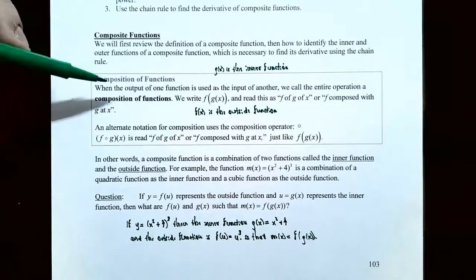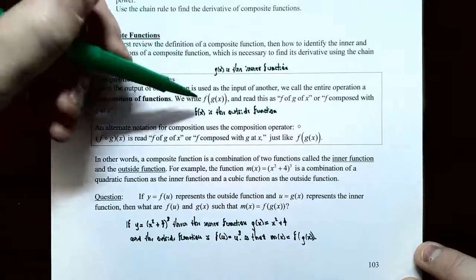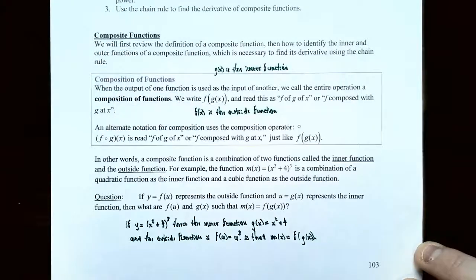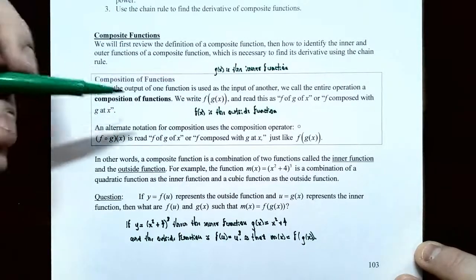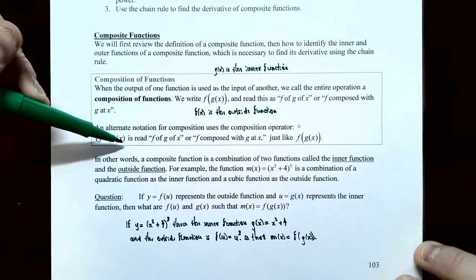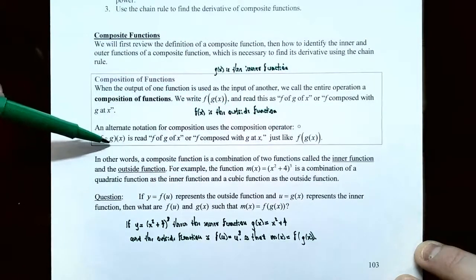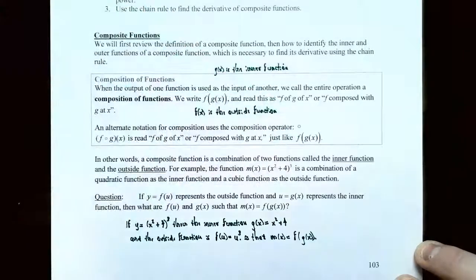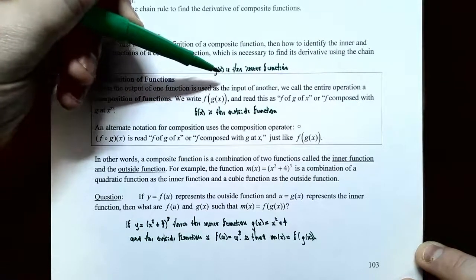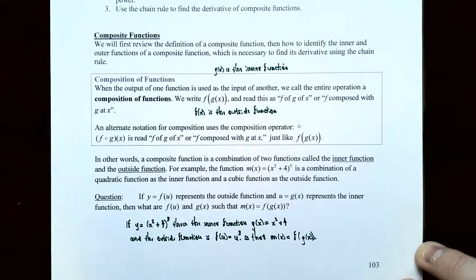Composition of functions: when the output of one function is used as the input of the other function, we call the entire operation the composition of functions. It's written as f(g(x)), read as 'f of g of x,' or 'f composed with g at x.' An alternative notation uses a small circle for the composition operator, so f∘g(x) equals f(g(x)). Since g(x) is being substituted into f(x), g(x) is called the inner or inside function, and f(x) is called the outside or outer function.